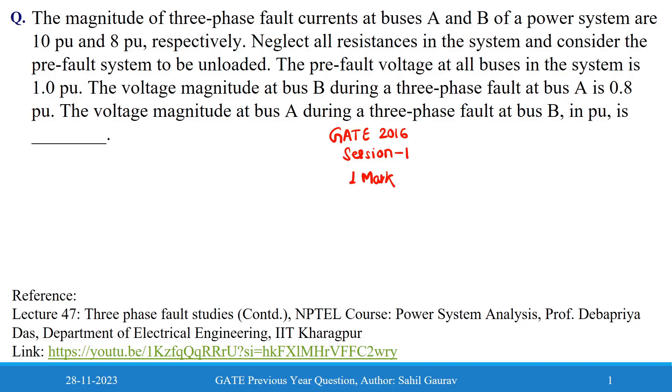The pre-fault voltage at all buses in the system is 1.0 per unit. The voltage magnitude at bus B during the three-phase fault at bus A is 0.8 per unit. The voltage magnitude at bus A during three-phase fault at bus B in per unit is what we need to find. So it is a very simple problem.